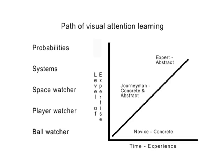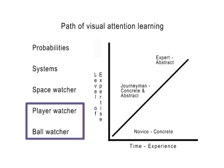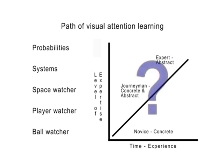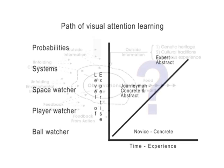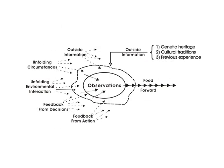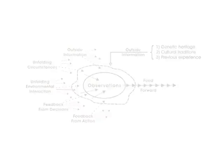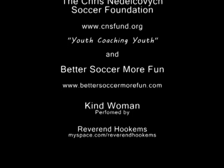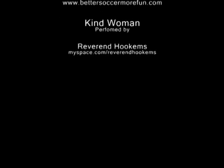We'll conclude this video with a model for visual attention learning. Over time, a player should progress from a concrete orientation of the game to a more complex and abstract orientation. This journey will be constrained by his or her genetic heritage, cultural traditions, and experience. In part five, we'll continue this look at targets and introduce workspaces.